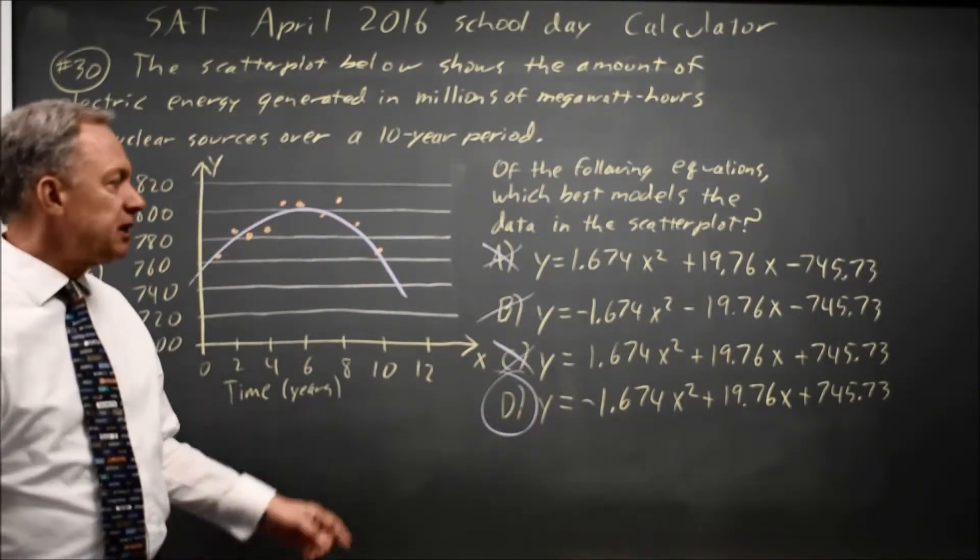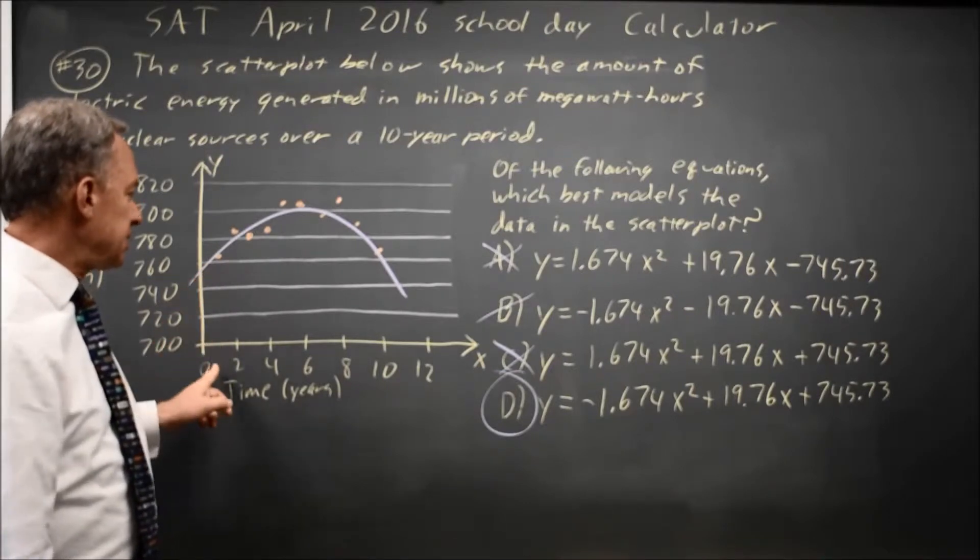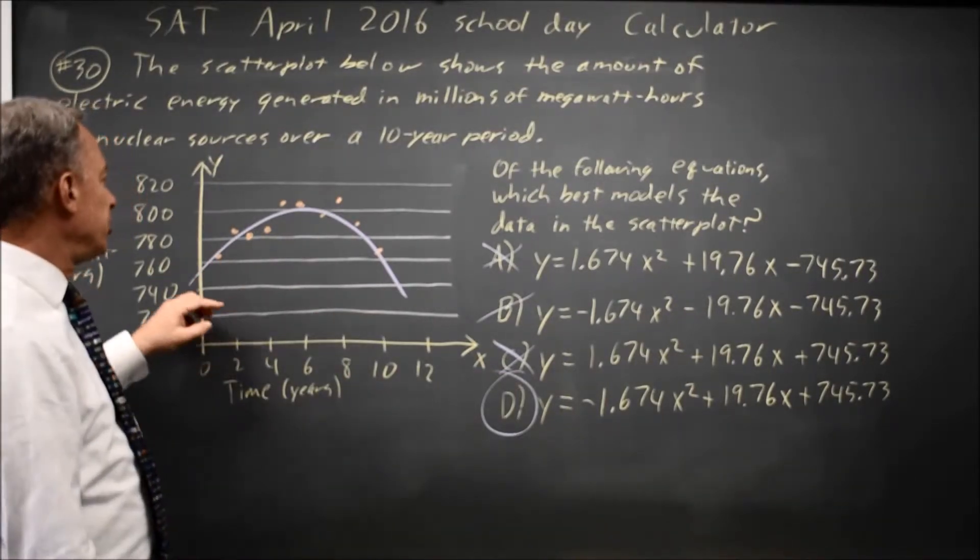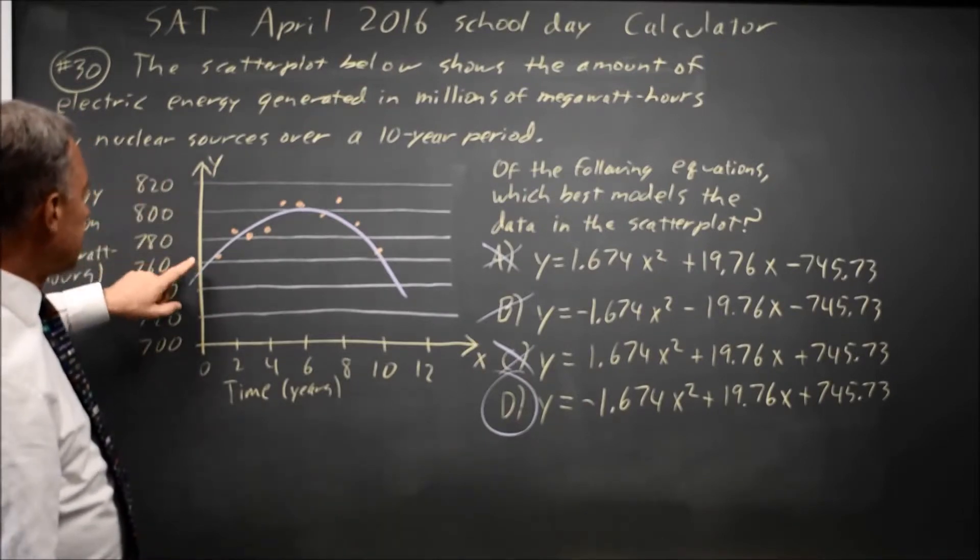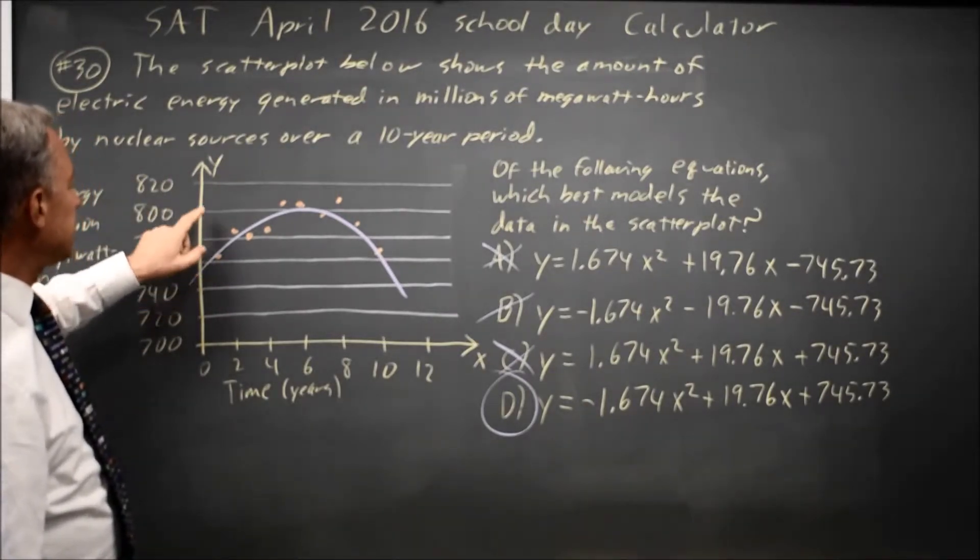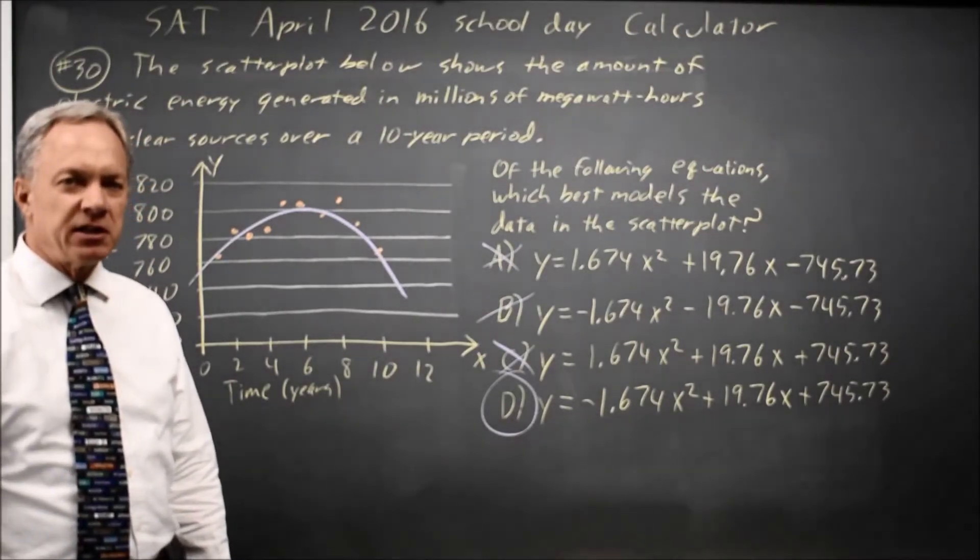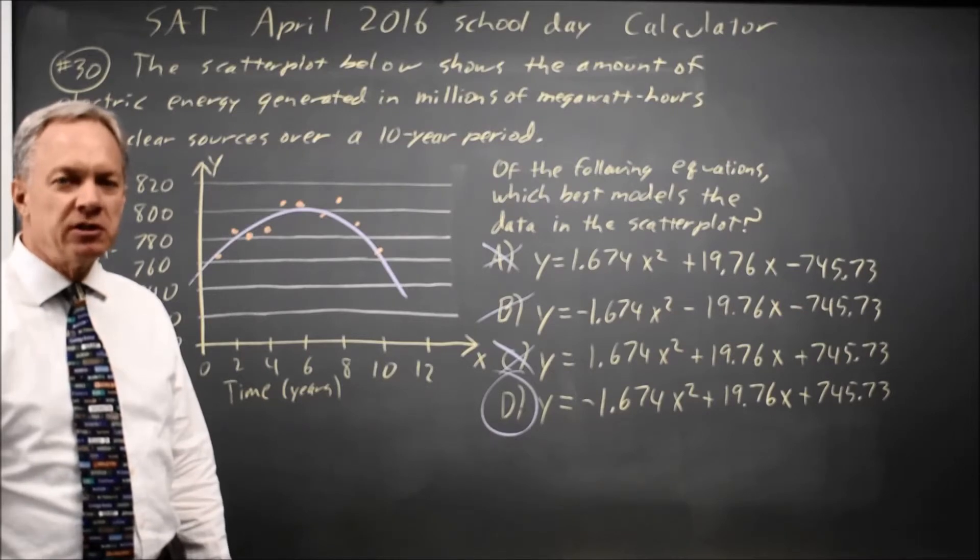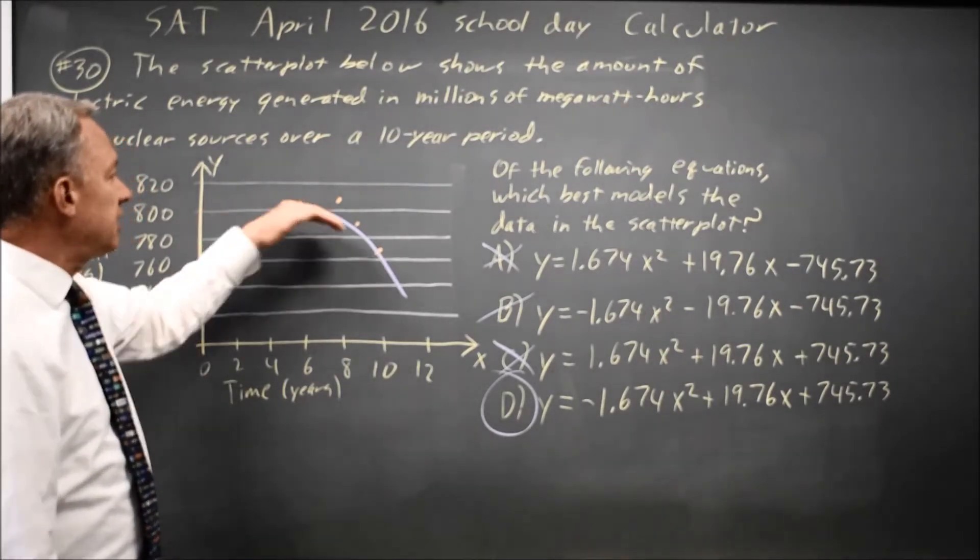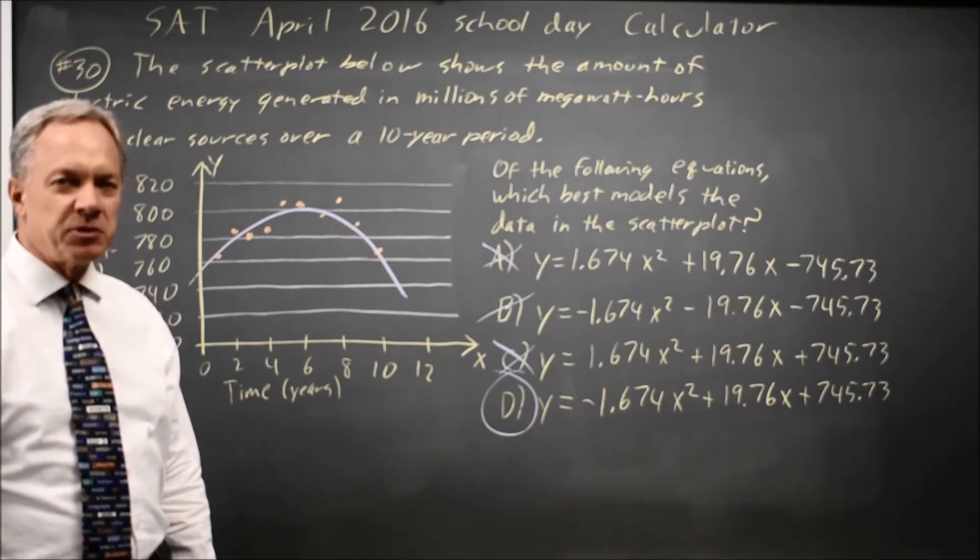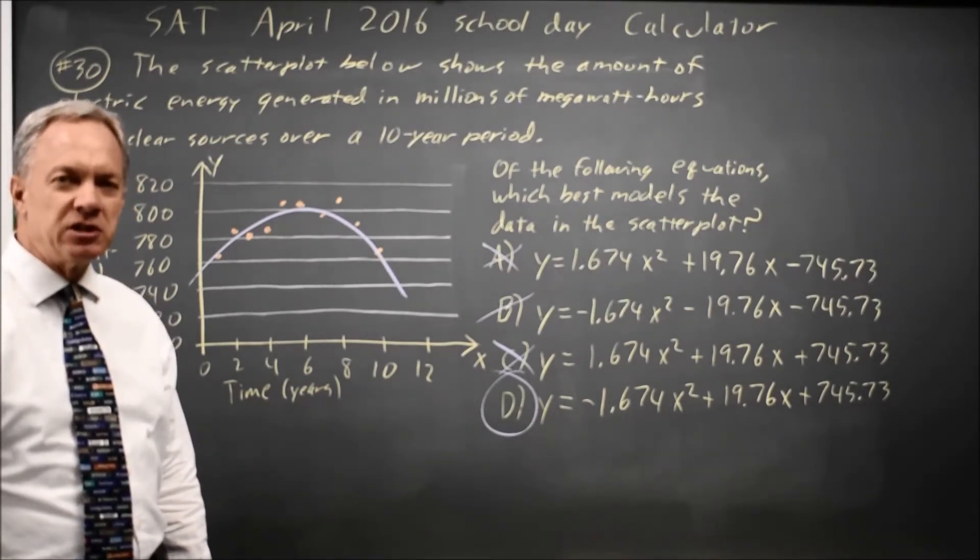Alternatively, we could enter all these points, x equals 1 through 10 more or less, you'd have to read carefully, and y from 760-something to 800-something, and then ask the calculator to fit a quadratic model to data. But it's much quicker to use our intuition, because we can tell it's a parabola opening down with a positive y-intercept, and there's only one choice that meets those two criteria.